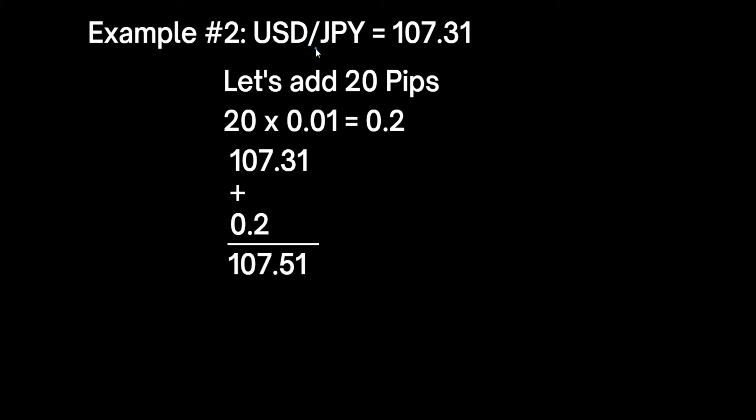Likewise for USD/JPY — if the current price is 107.31, meaning one USD is equivalent to that many Japanese yen, and we want to add 20 pips, we multiply 20 by 0.01, which gives 0.2. So 107.31 plus 0.2 gives us the new current price.